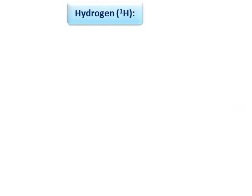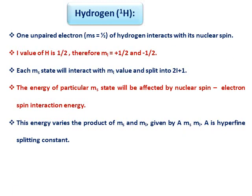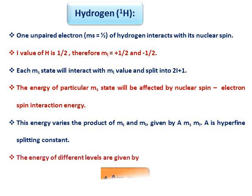Now let us see an example of hyperfine splitting — the hydrogen H-1 nucleus. In hydrogen there is one unpaired electron, so MS = ±1/2. This MS value of hydrogen interacts with its nuclear spin; the I value of hydrogen is 1/2, so MI = +1/2 and −1/2. Each MS state interacts with the MI values and splits into 2I+1 levels. The energy of a particular MS state is affected by the nucleus spin–electron spin interaction energy, which varies as the product A·MS·MI, where A is the hyperfine splitting constant. The energy of different levels is given by E = GβMS + A·MS·MI, where G is the g-factor and β is the Bohr magneton.